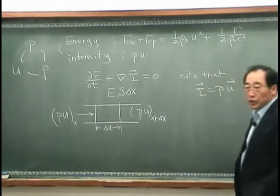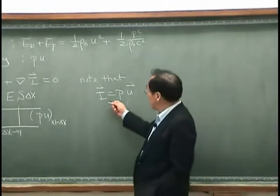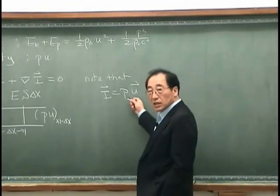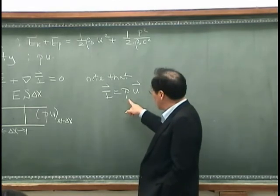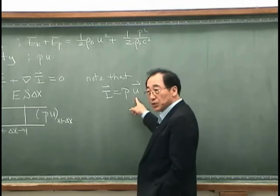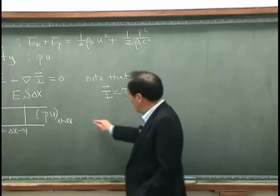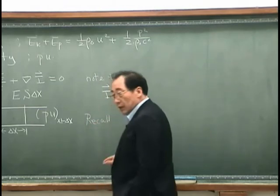This physical quantity is very interesting because that is P multiplied by U. U is the velocity. And recall the acoustic impedance or driving point impedance.